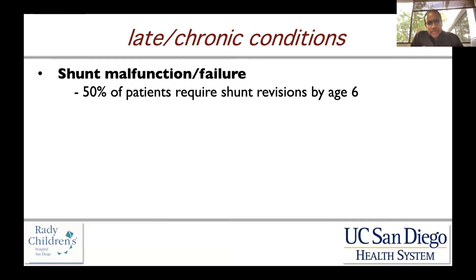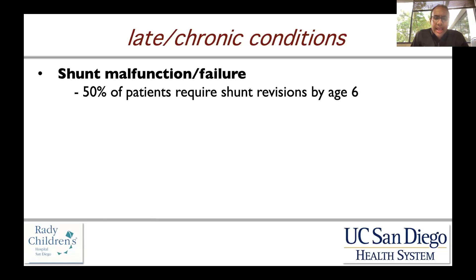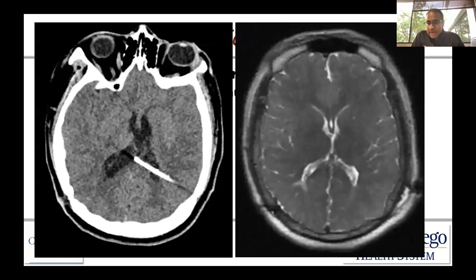When we talk about shunt malfunction and failure, we tell people that within five years, 50% of children who have a shunt require some kind of shunt operation. That number may be a bit lower now based on more recent published data, but in general it's still very commonly used. Children who have myelomeningocele and require a shunt are often very shunt dependent.